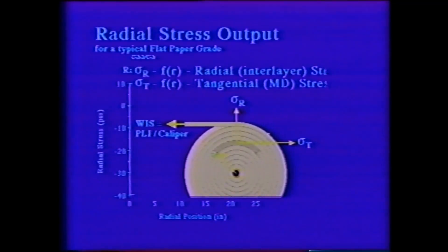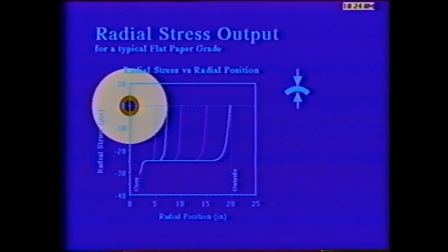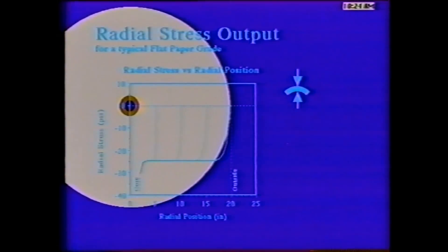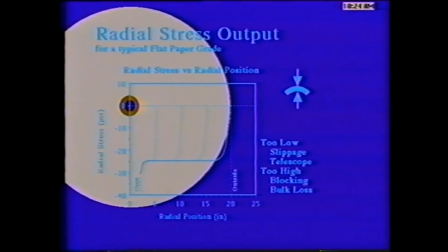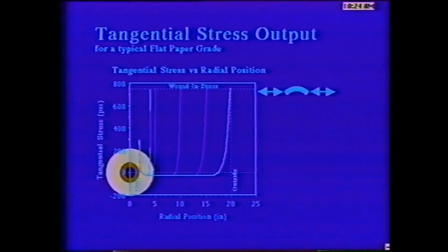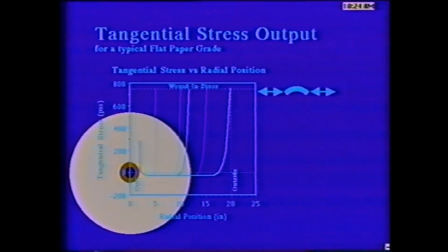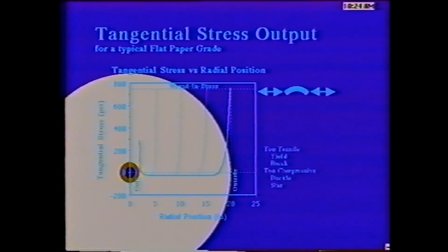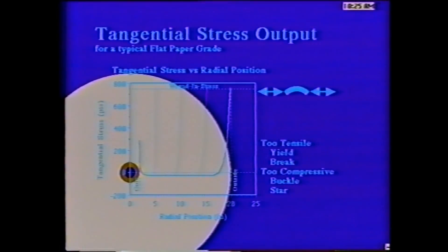As seen here during the building of a roll, the radial stress profile has three regions: the inner and outer gradients and a near-level interior. The radial stresses decrease to zero on the outside of the roll. Thus, if the material is subject to bulk loss, the inviolate laws of physics tell us that this loss will not be uniform through the roll. The tangential stress profile also has three regions. The tensile stress at the outside of the roll is equal to the wound-in tension divided by caliper. The tangential stress in the interior of the roll, though small, may be either tensile or compressive. If the interior is too compressive, buckling and starring might occur.